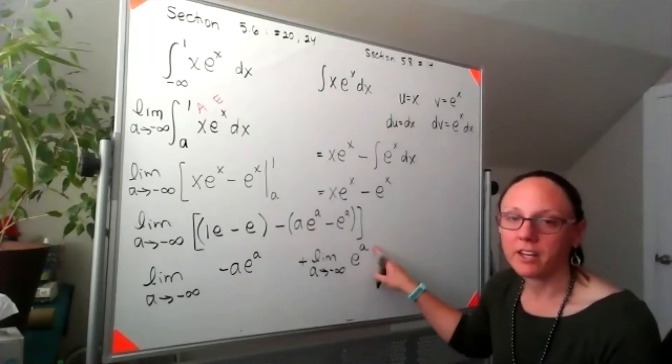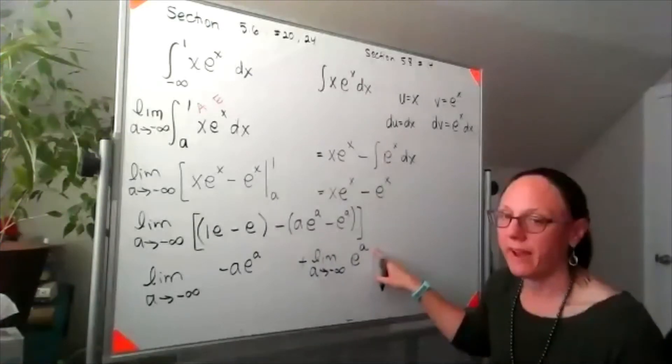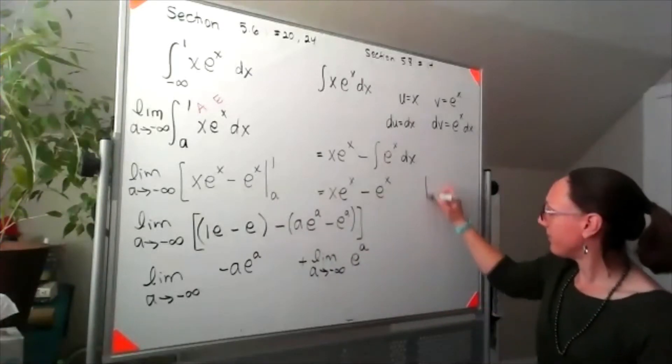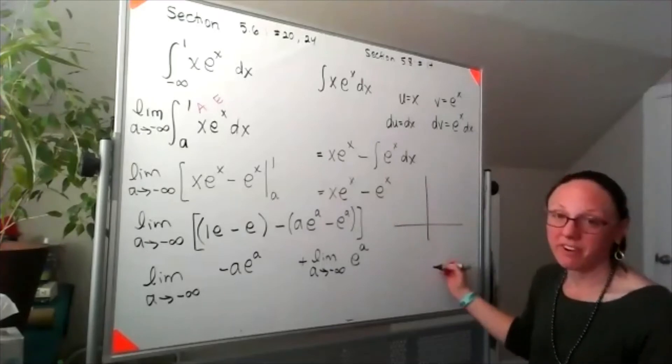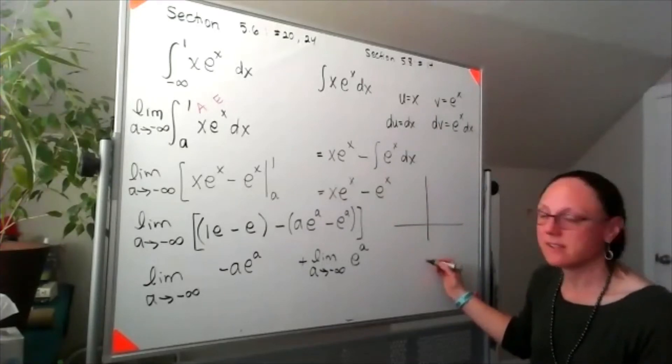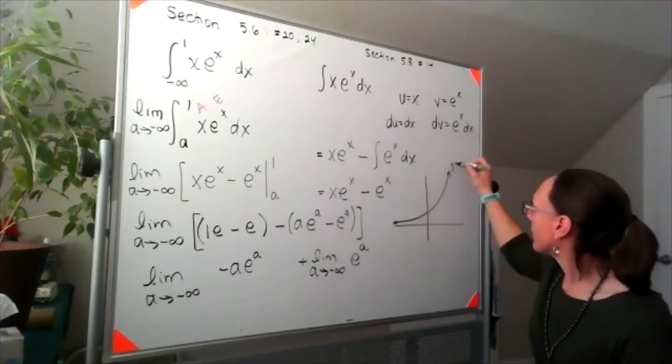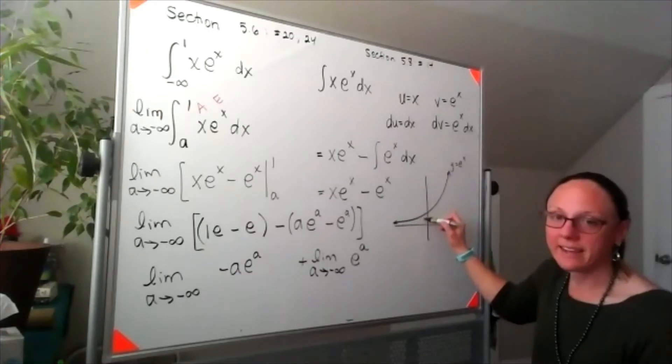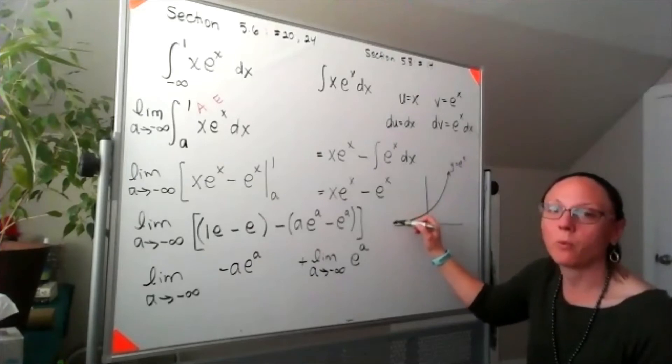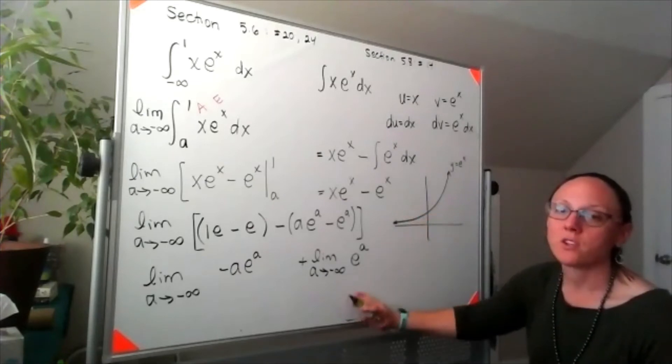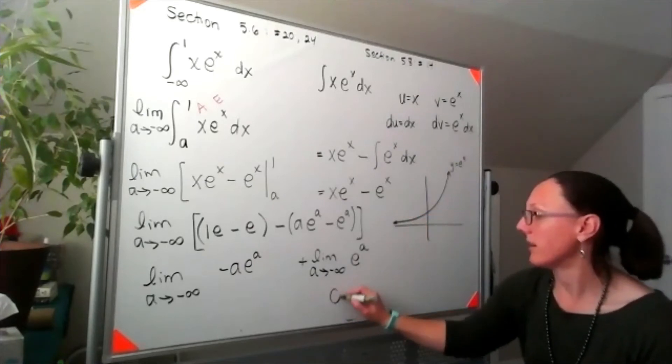If I plug in negative infinity, then I'm looking at e to the negative infinity. A couple of different ways to think about that, but my favorite is just thinking about a graph of e to the x. As x approaches negative infinity, my y value is going to zero. So the answer to this limit is zero.